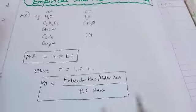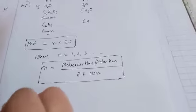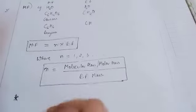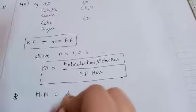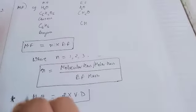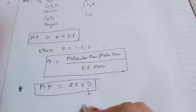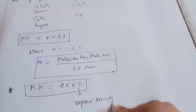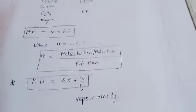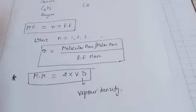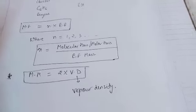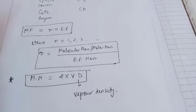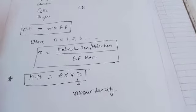There is also a short formula: if vapor density (VD) is given to you, then Molar Mass = 2 × VD, where VD is the vapor density — that is, whatever is the density of the vapor. So Molecular Mass = 2 × Vapor Density. These are the key formulas, and on the basis of these I'll show you how to solve numerical problems.